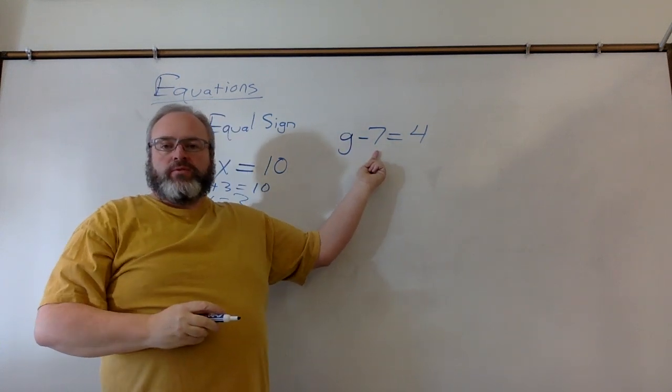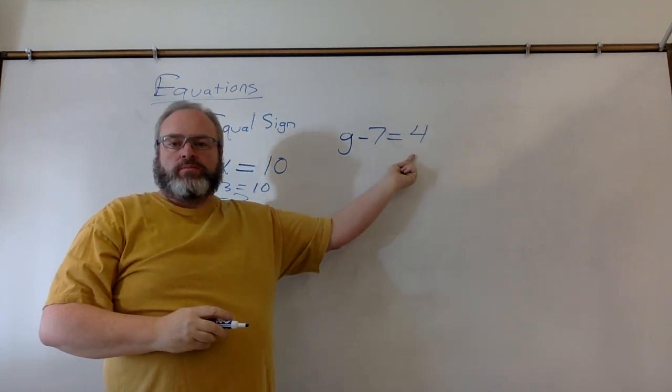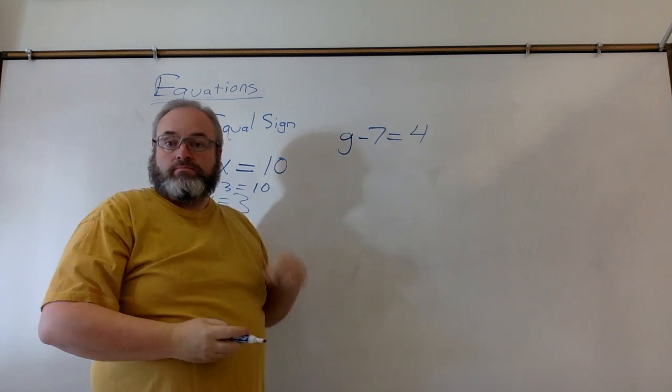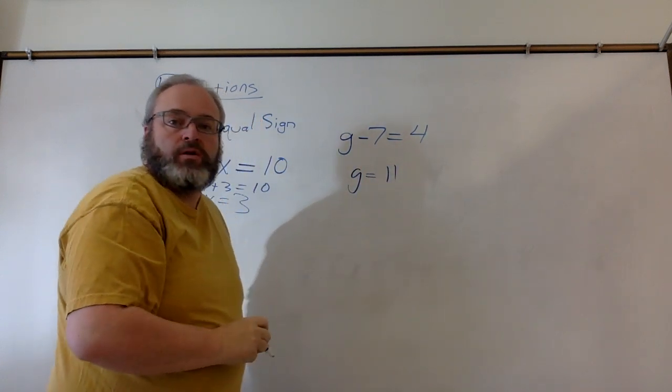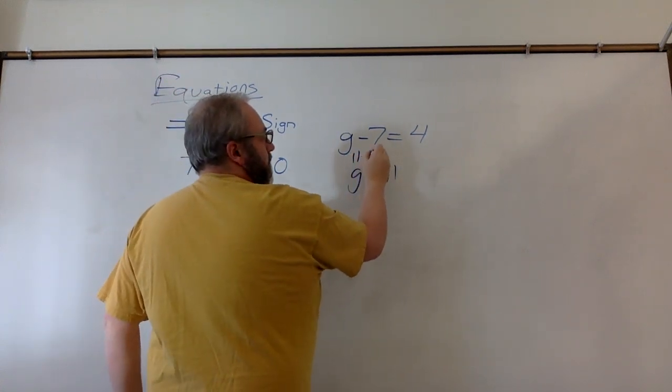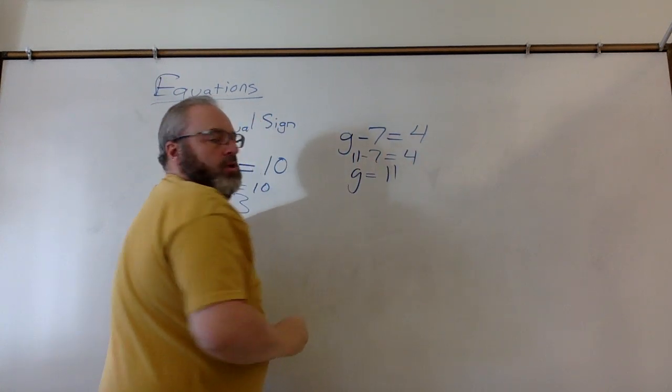what do you subtract 7 from to give you 4? g would have to be 11, because 11 minus 7 equals 4.